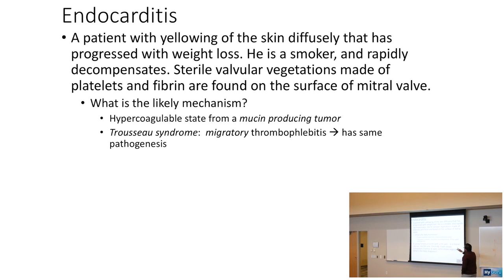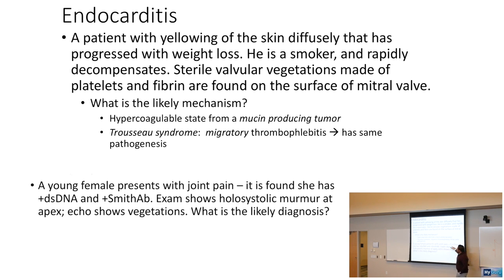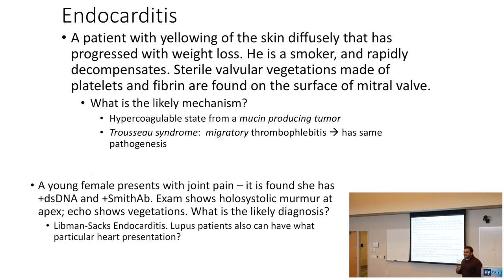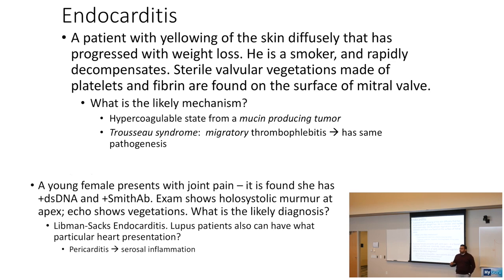A young female with joint pain, positive double-stranded DNA, and positive Smith antibody has a holosystolic murmur at the apex and vegetations on echo. This is Libman-Sacks endocarditis, occurring in lupus patients. Lupus patients can also get pericarditis because lupus is an inflammatory disorder causing serosal inflammation.